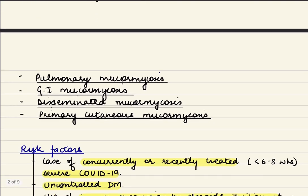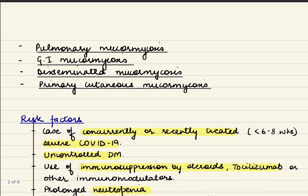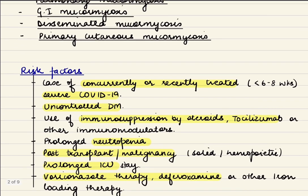Other types are pulmonary mucormycosis, GI mucormycosis, disseminated mucormycosis, and primary cutaneous mucormycosis, but we will be restricting our discussion to rhino-orbito-cerebral mucormycosis.